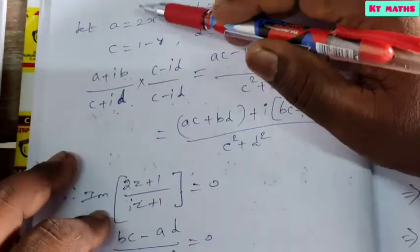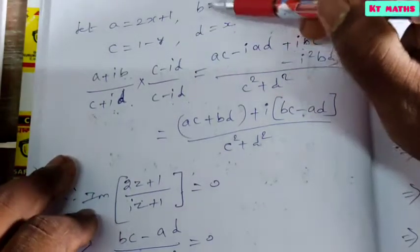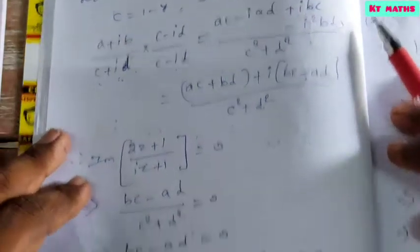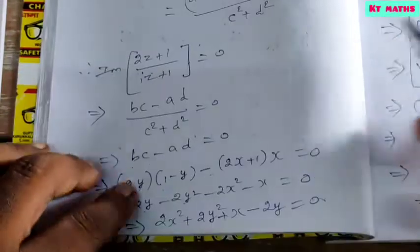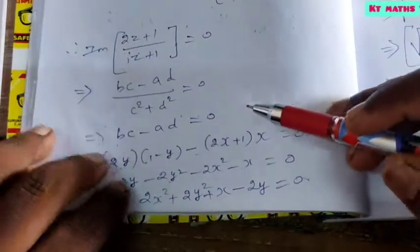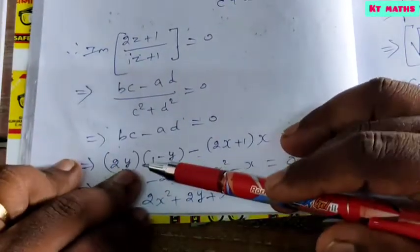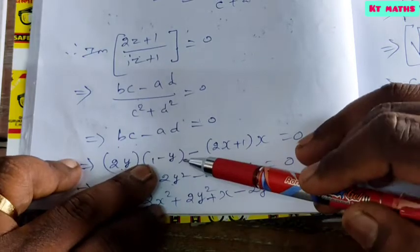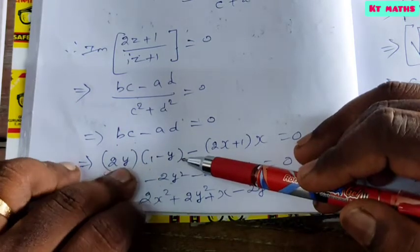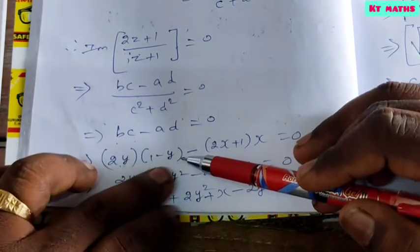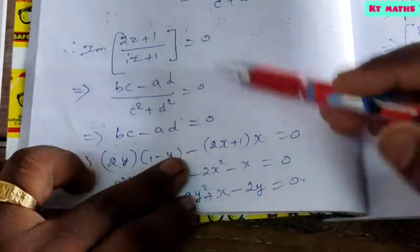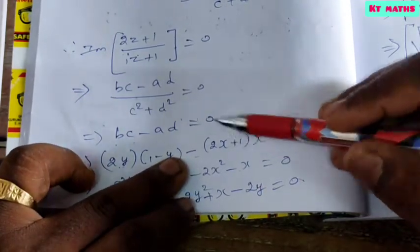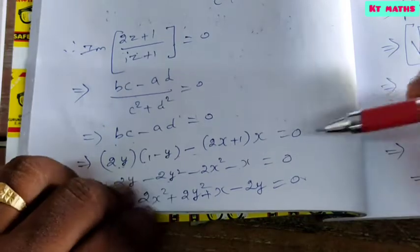Substituting back the values of A, B, C, D: B is 2y, C is 1 minus y, A is 2x plus 1, and D is x.